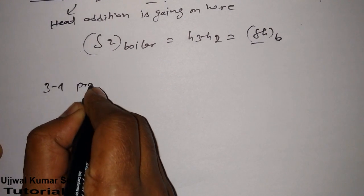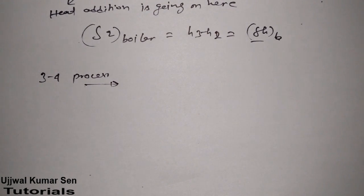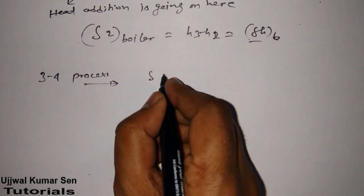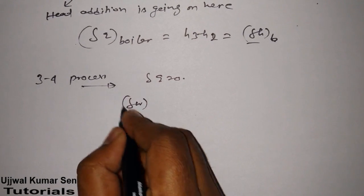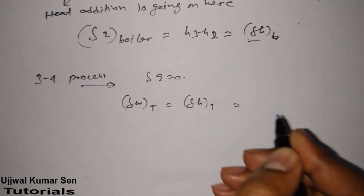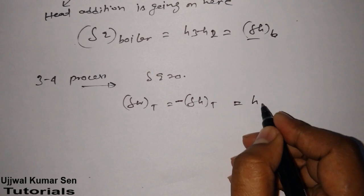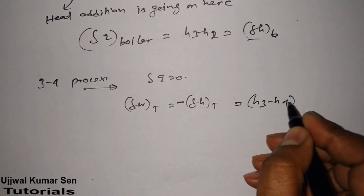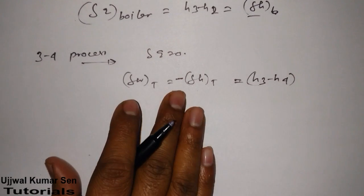For the 3-to-4 process, the turbine is there. Here delta Q equals zero, so the turbine work done is: W_t = H3 minus H4.